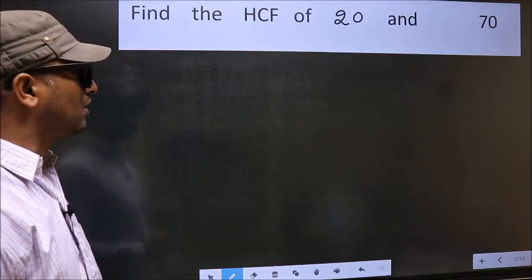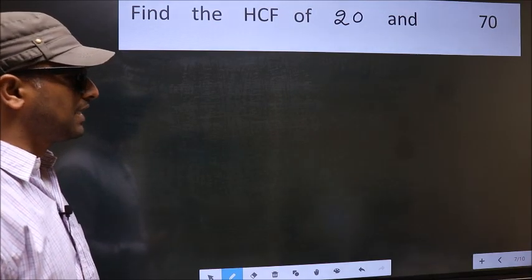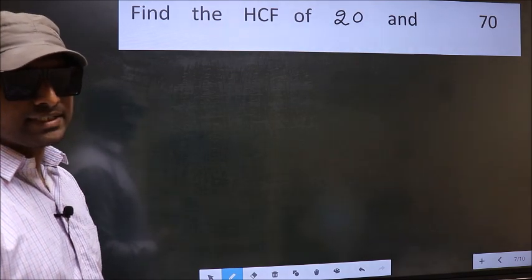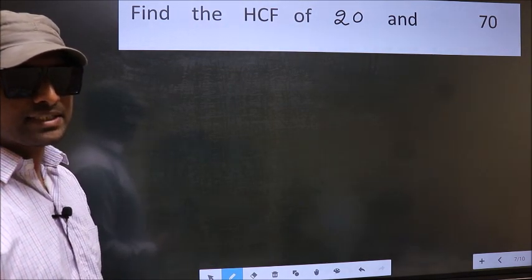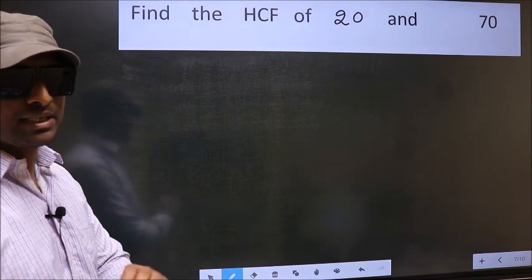Find the HCF of 20 and 70. To find the HCF, we should do the prime factorization of each number separately.